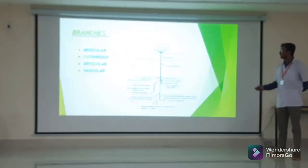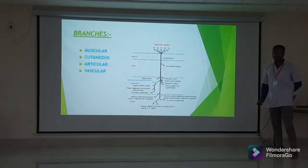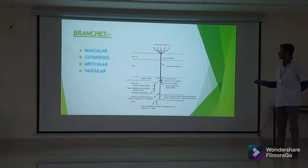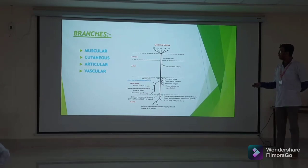Like every other nerve, the median nerve has four types of branches: muscular branch, cutaneous branch, articular branch, and vascular branch.